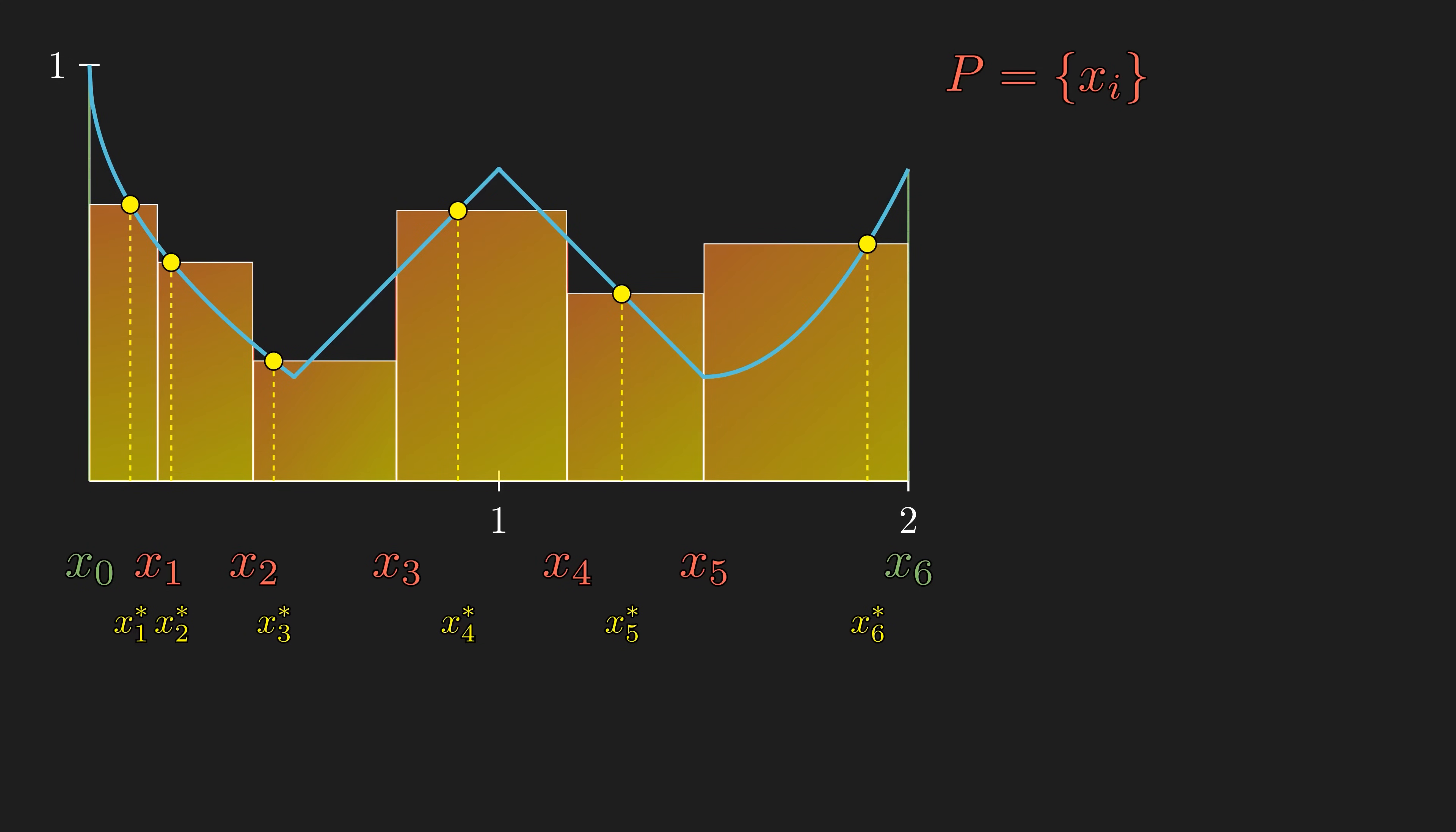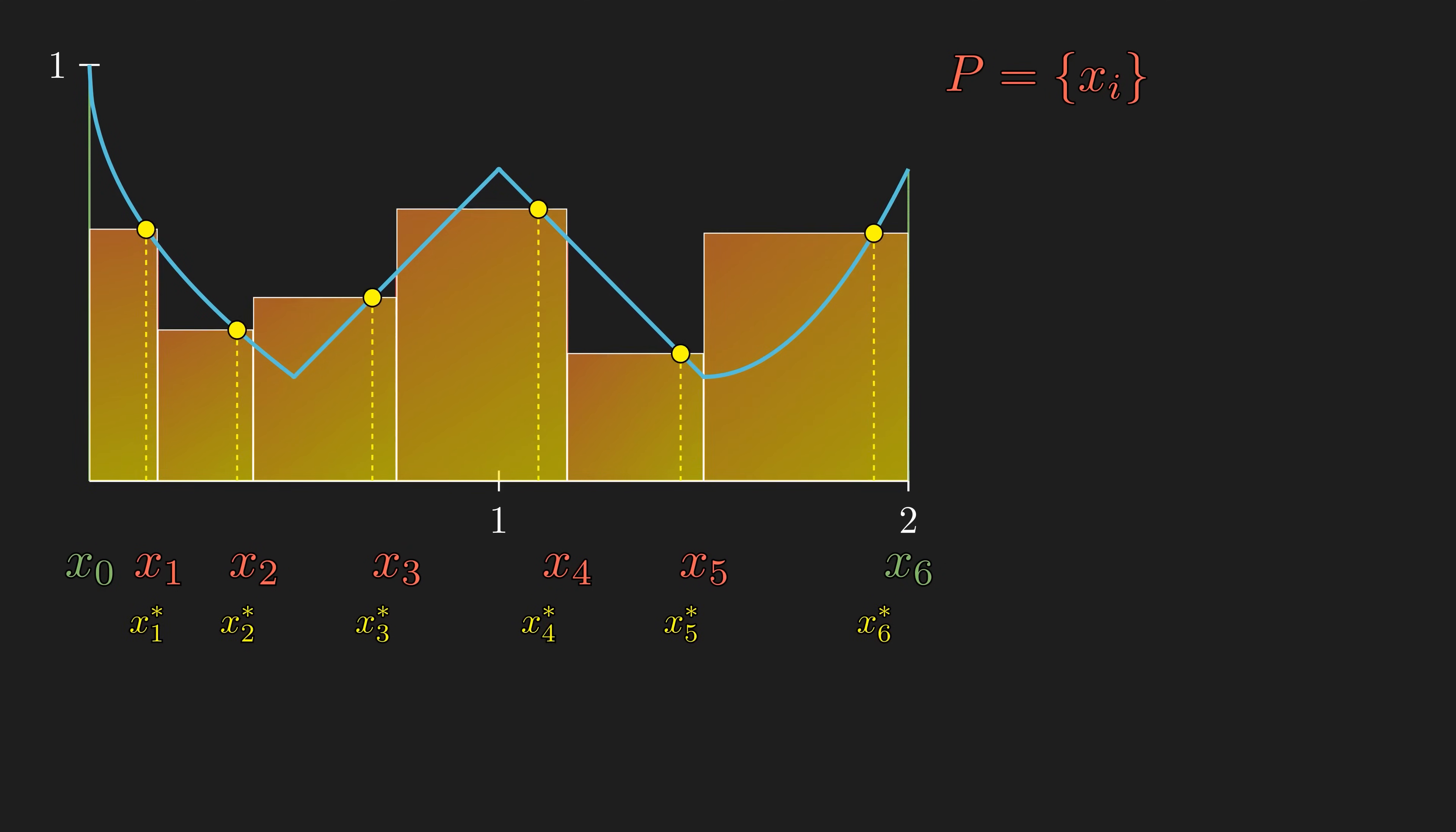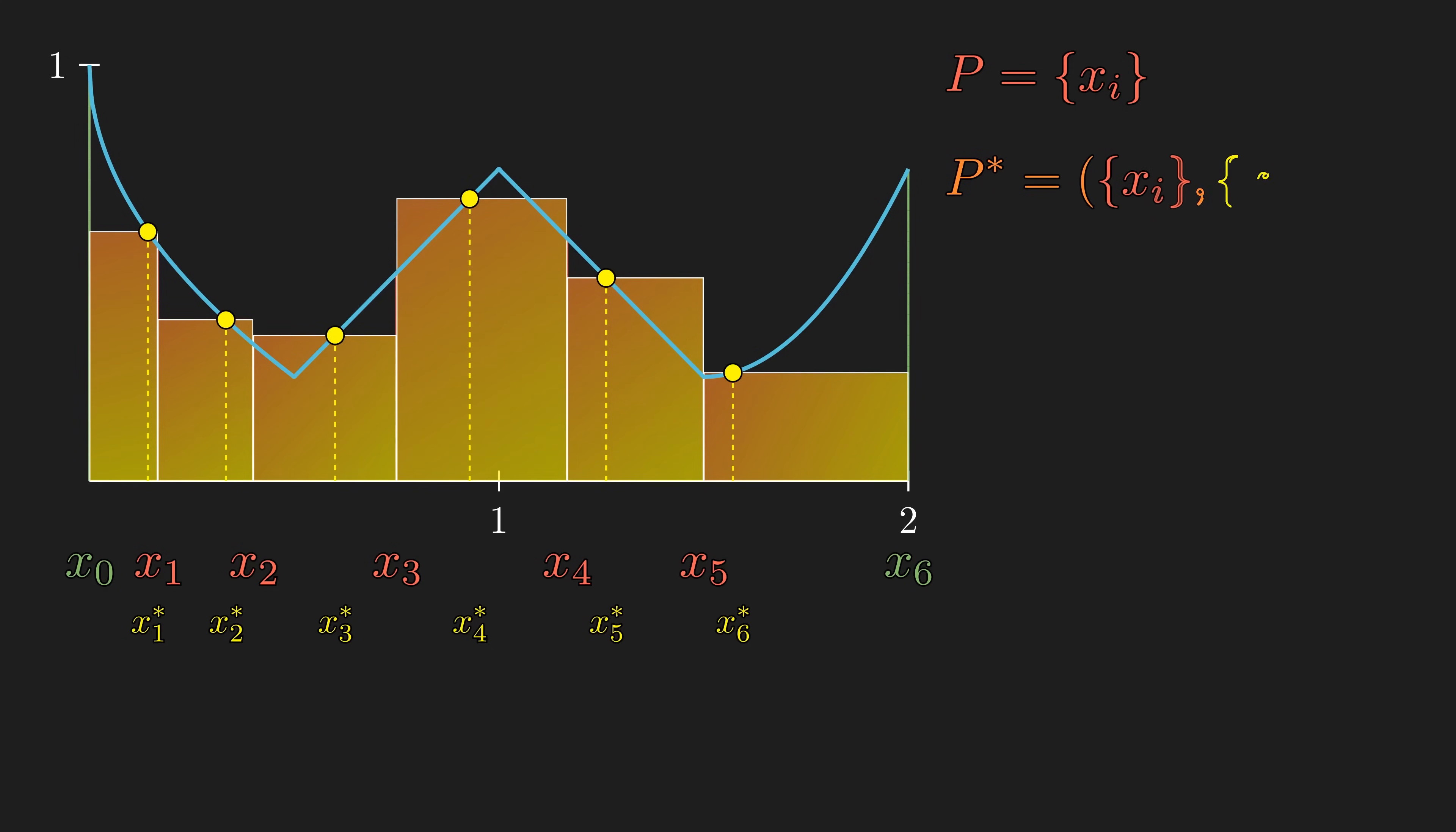In elementary calculus, we typically tag the left endpoint of each interval, or the right, or the midpoint. But in the context of generalized Riemann sum, tags can be chosen arbitrarily. We typically call the partition along with the tags the tagged partition, labeled P*.